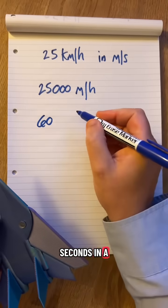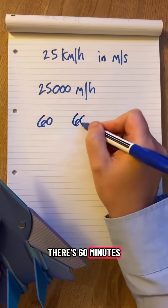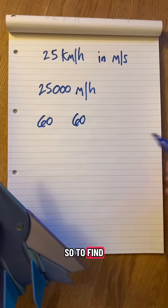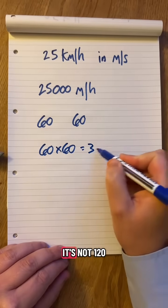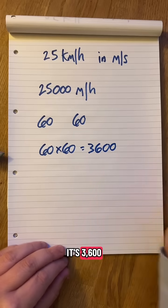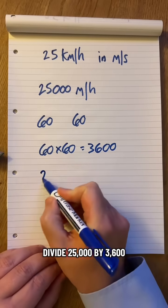There's 60 seconds in a minute and 60 minutes in an hour. So to find how many seconds in an hour, I'm going to do 60 times 60. It's not 120, it's 3,600. So if I divide 25